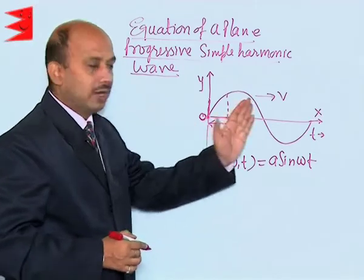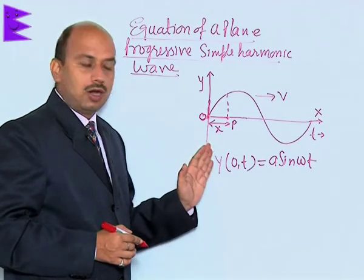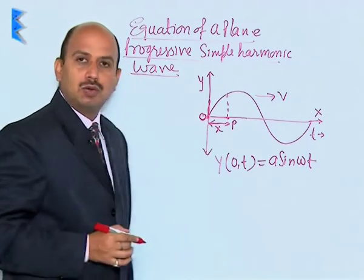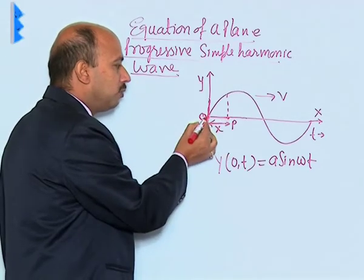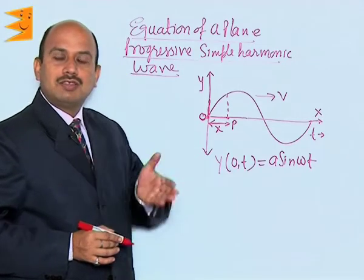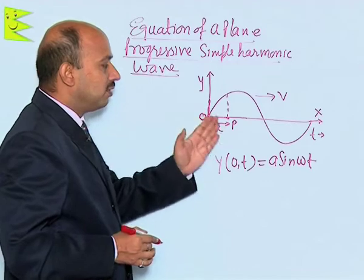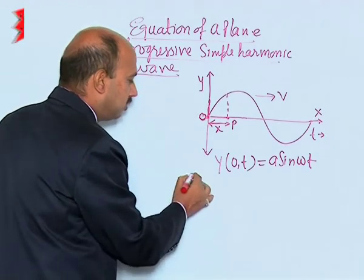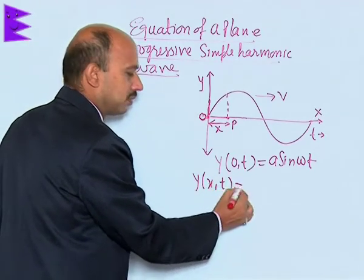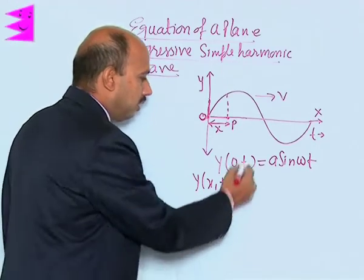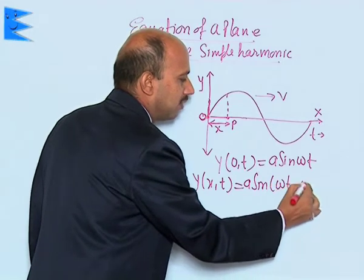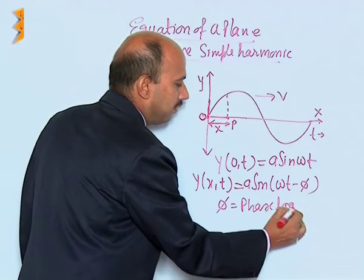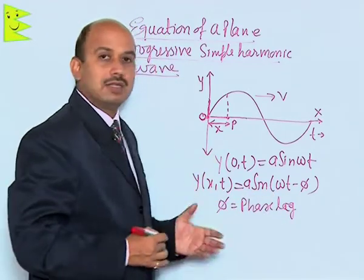Since this wave is propagating, all the particles of the medium vibrate periodically. Consider a particle P at a distance x from the origin. This particle and the particle at the origin are not in the same phase, so there will obviously be some phase lag for the particle at P. The displacement of particle P can be written as y(x,t), which depends on both x and t: a sin(ωt − φ), where φ is called the phase lag of the particle with respect to the particle at the origin.